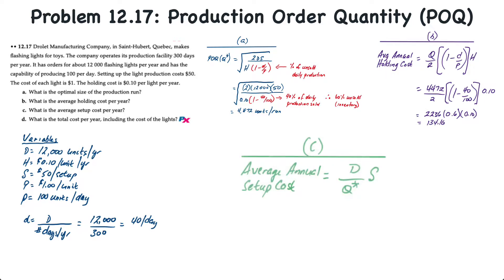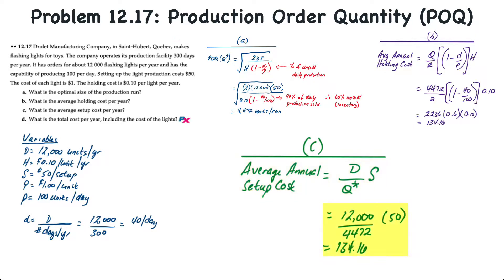For requirement C, the average annual setup cost uses the same formula as the EOQ model: annual demand divided by Q* times the setup cost. That's 12,000 divided by 4,472 times $50, which equals $134.16. You'll notice this is the same as the average annual holding cost, because similar to the EOQ model, at the optimal production level the holding costs and setup costs are equal.